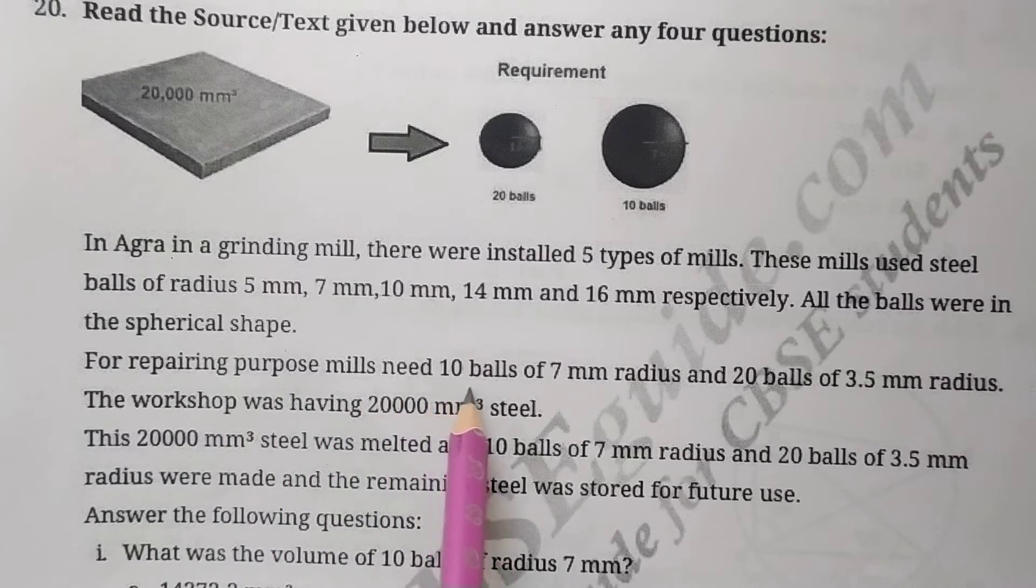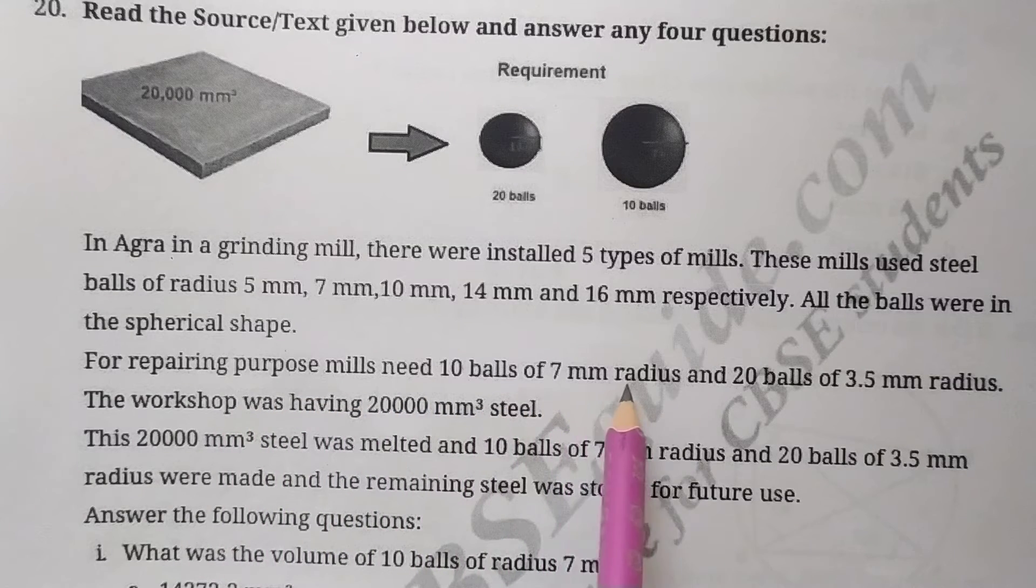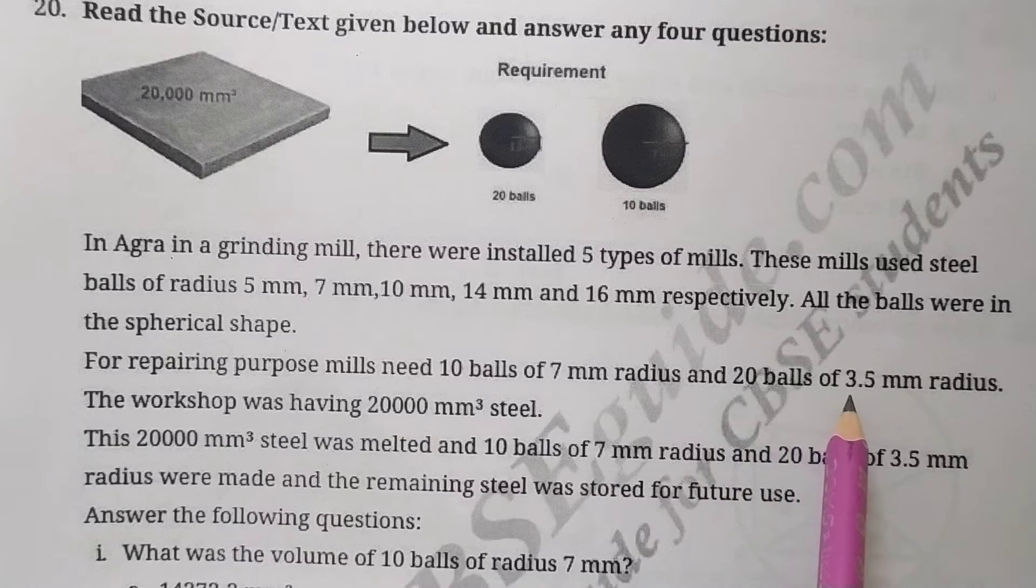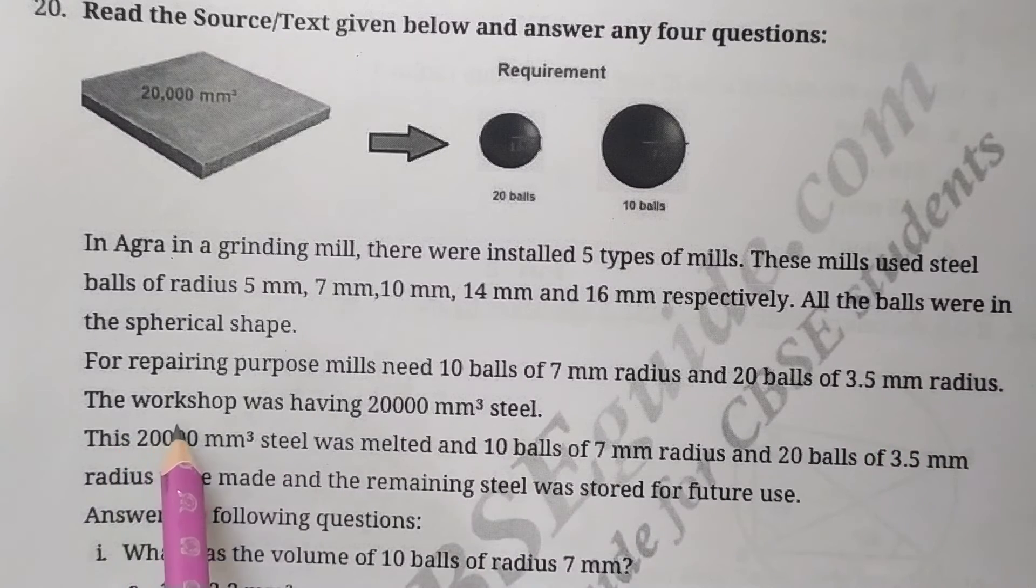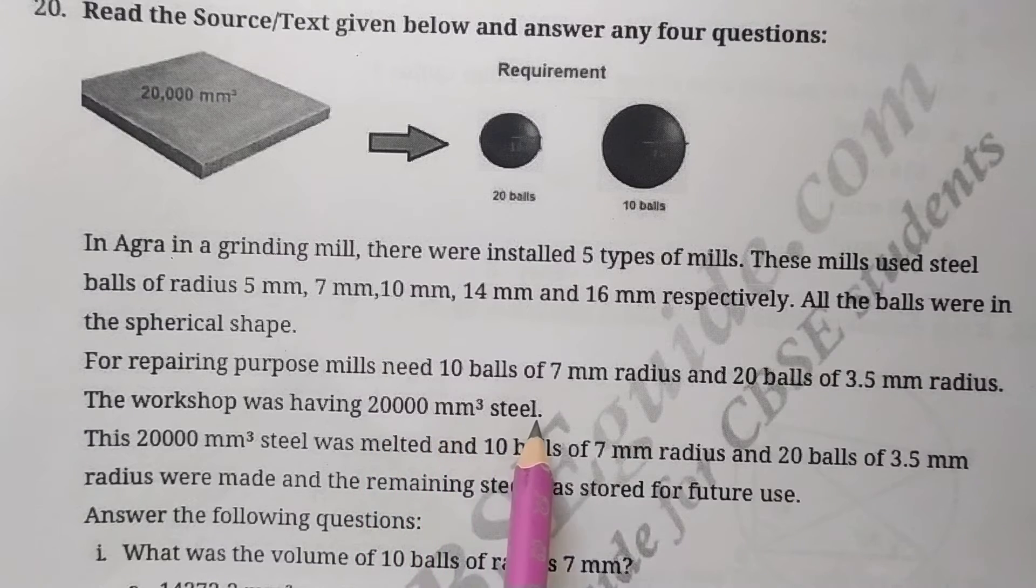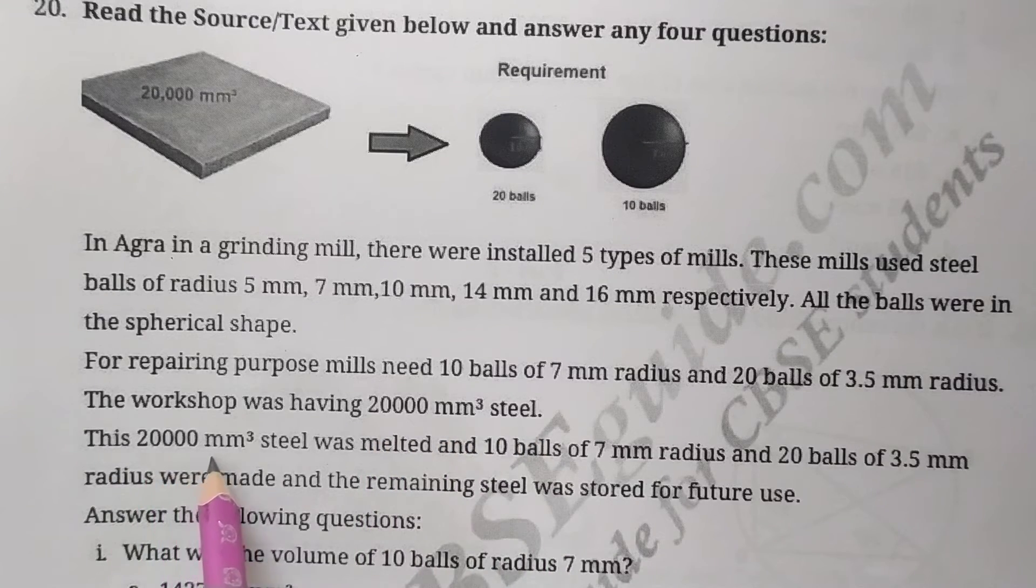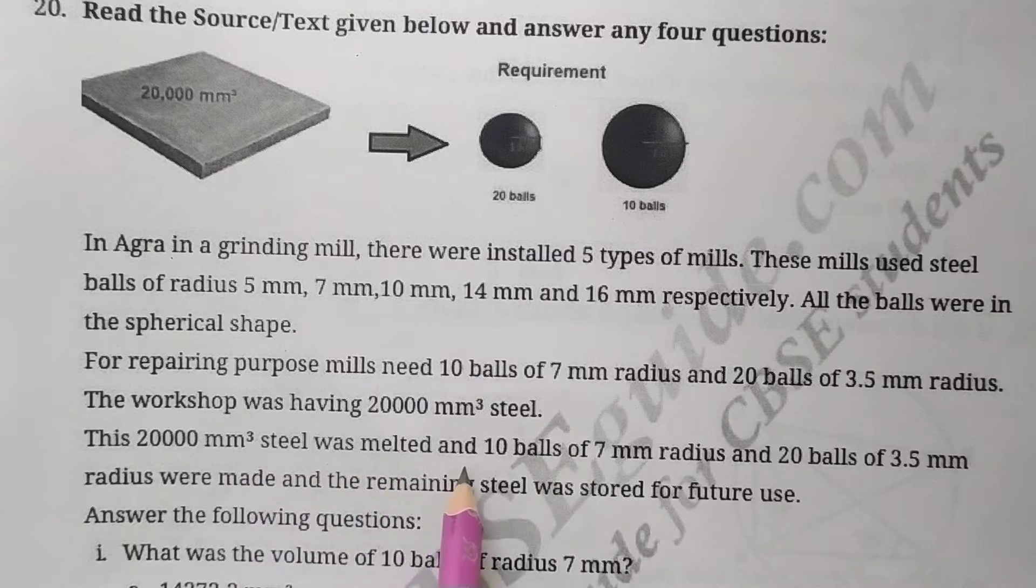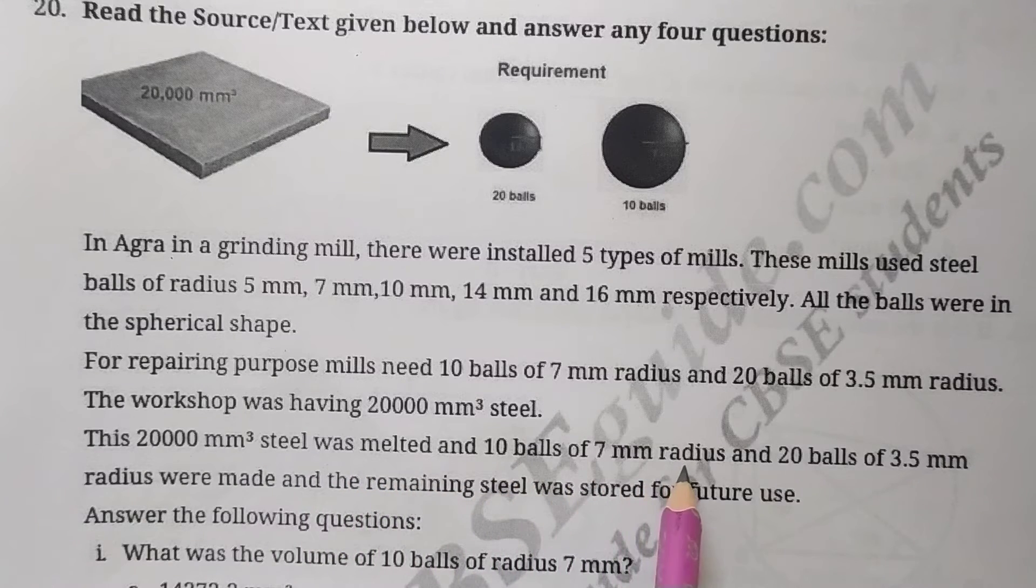For repairing purpose, mills need 10 balls of 7 mm radius and 20 balls of 3.5 mm radius. The workshop was having 20,000 millimeter cube steel.